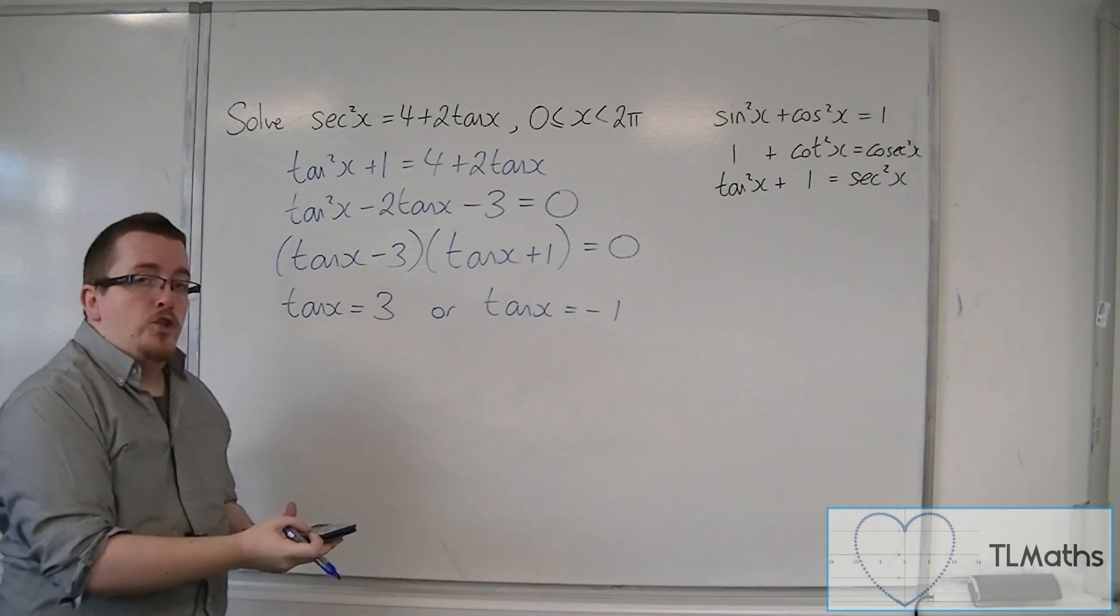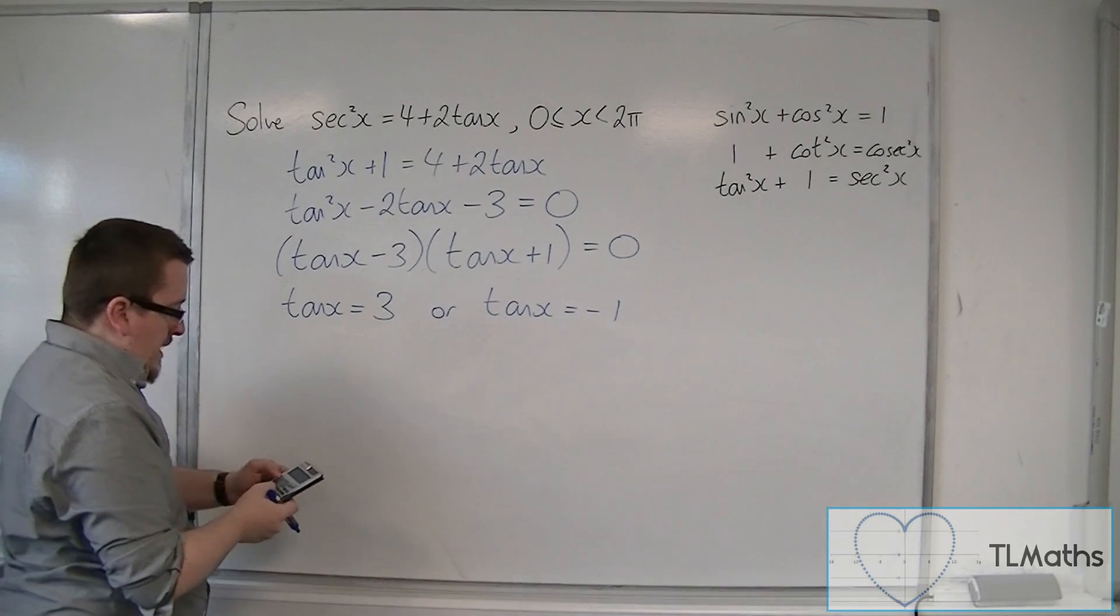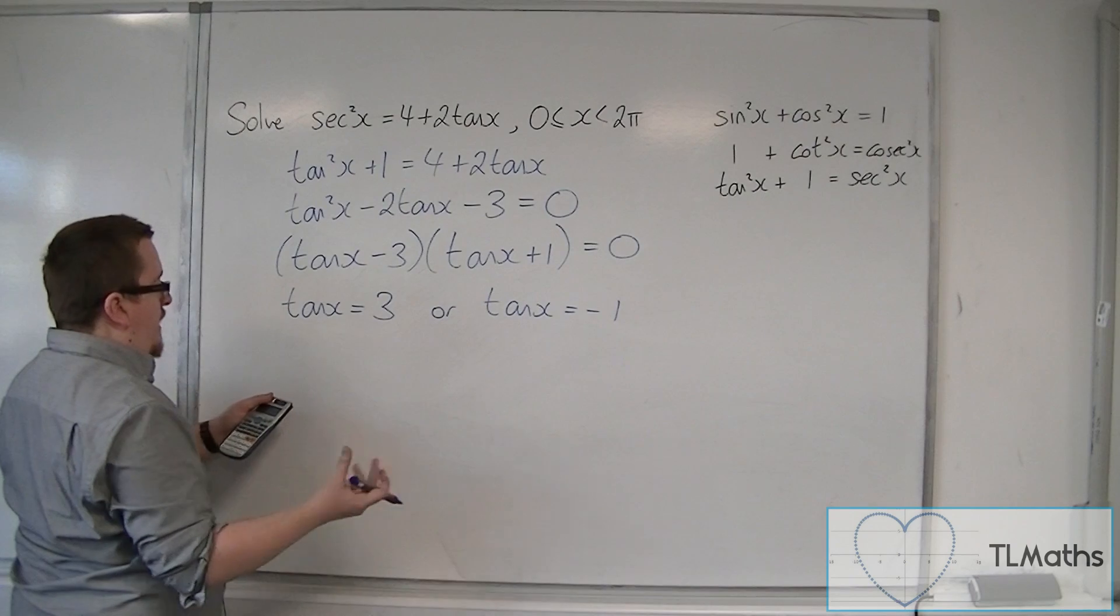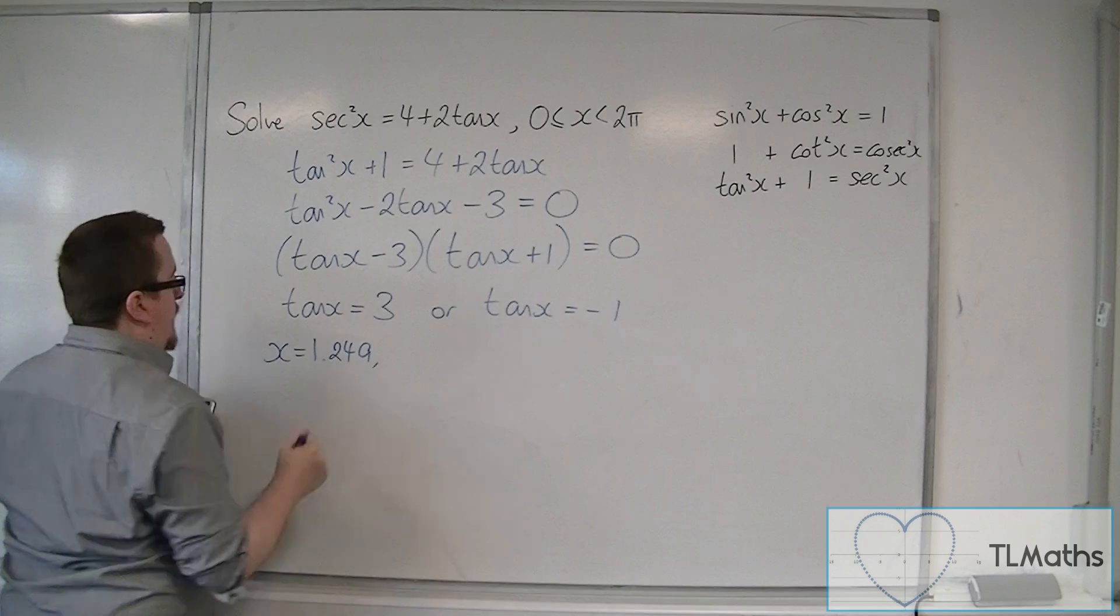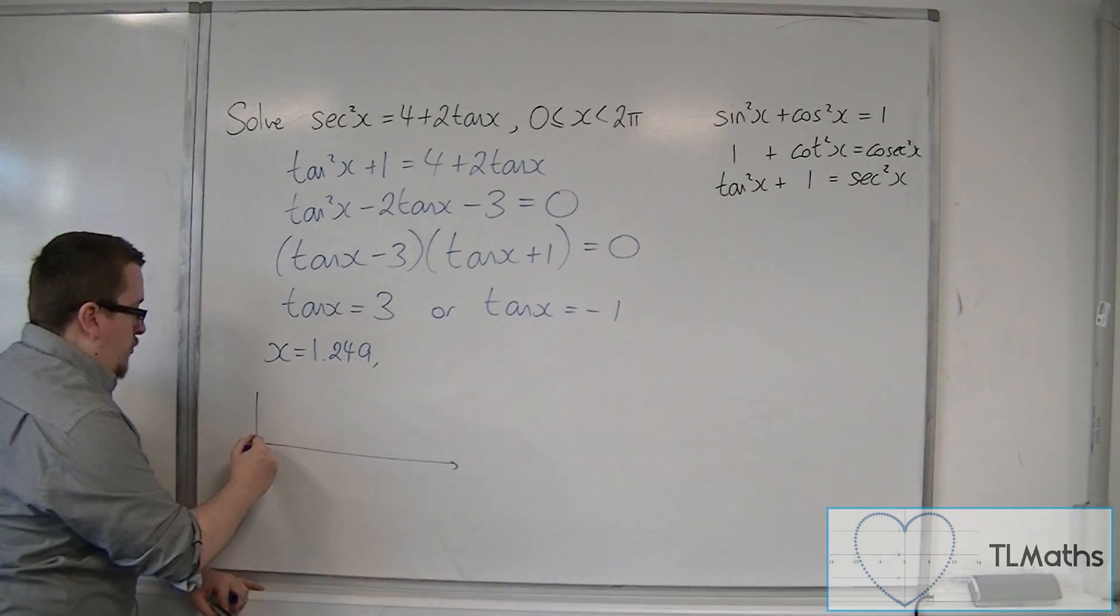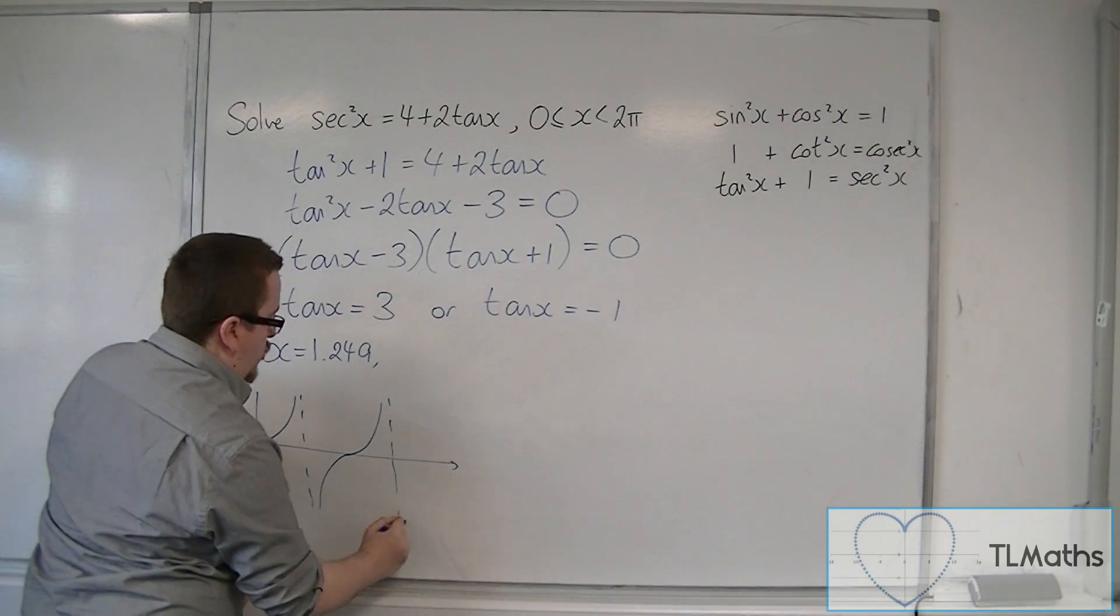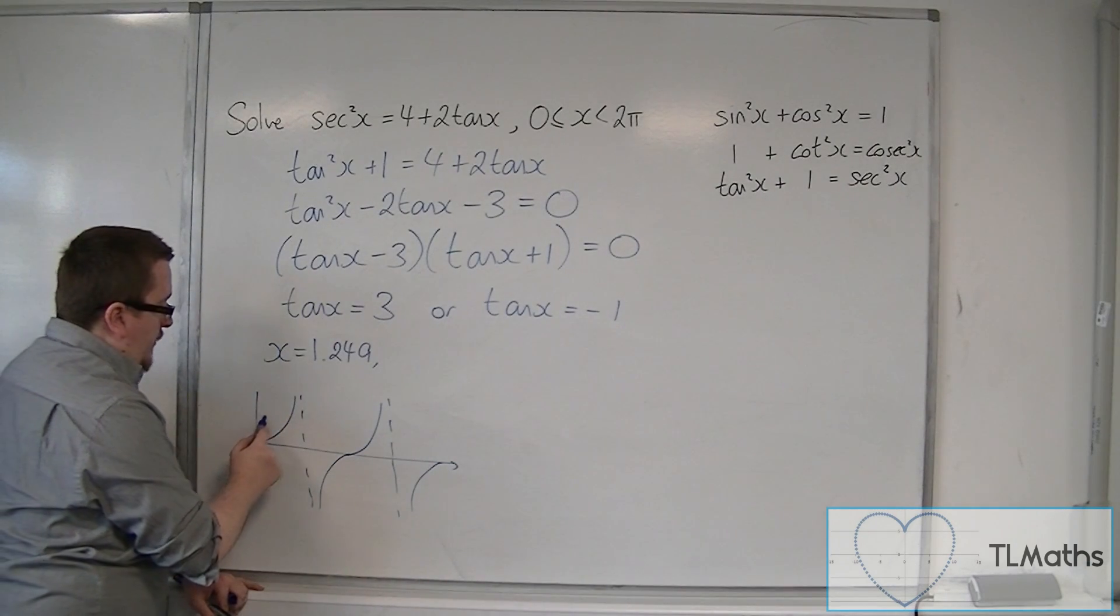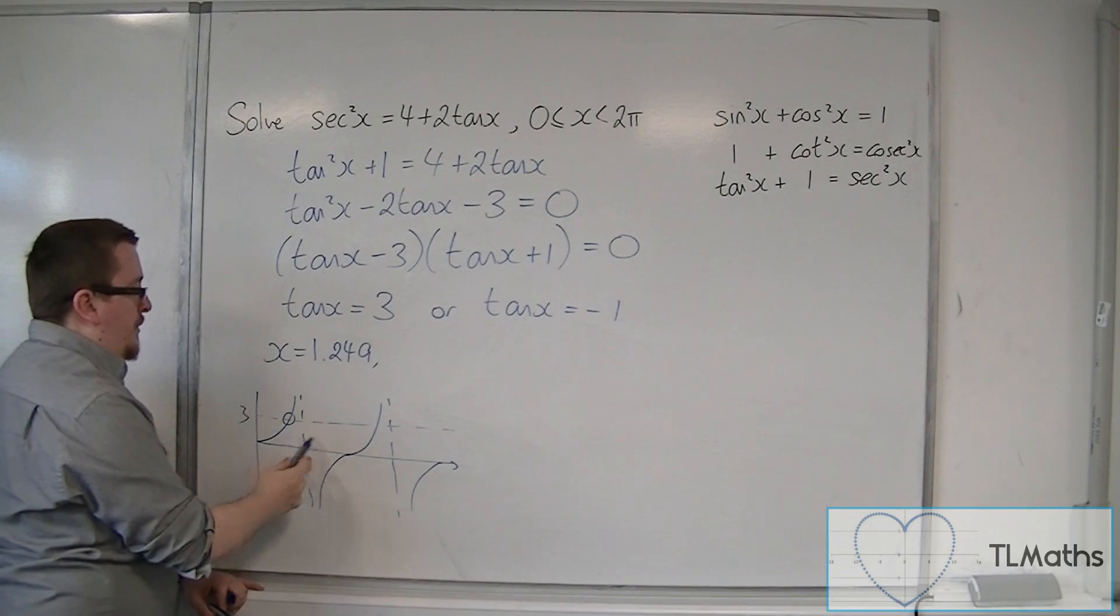So we need to make sure that our calculator is in radians. Inverse tan of 3 is equal to 1.249 to 3 decimal places. So x is equal to 1.249. If unsure, always a good idea to make a little sketch in solving your trig equations. So tan x is 3. So there's our first solution, 1.249.